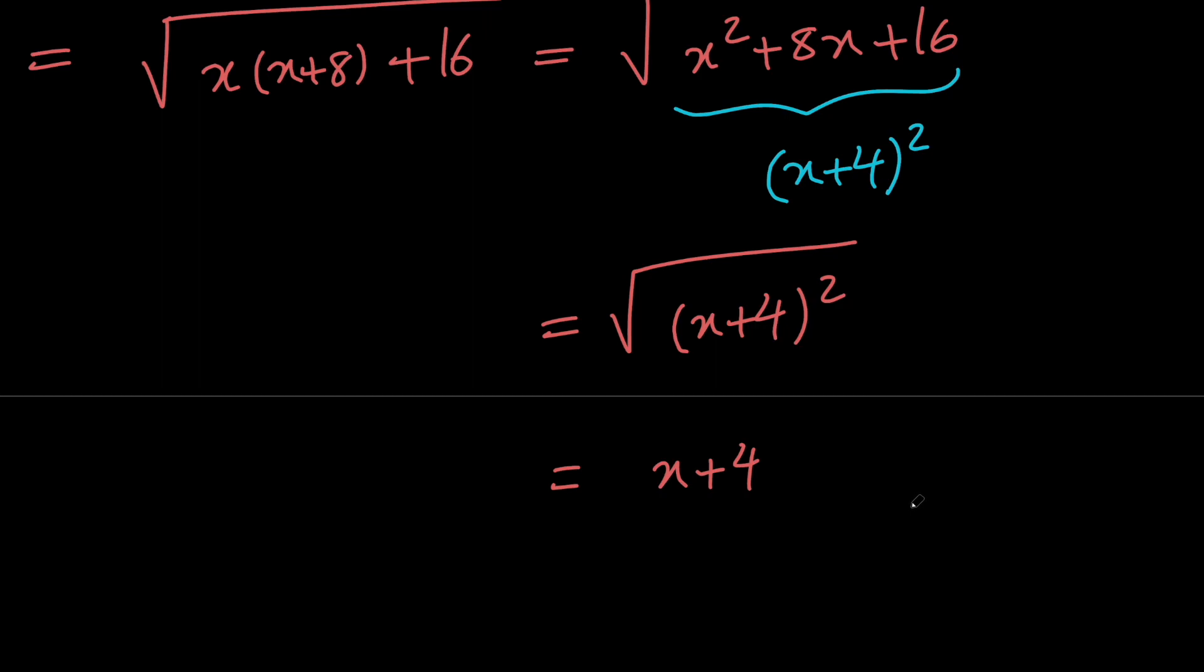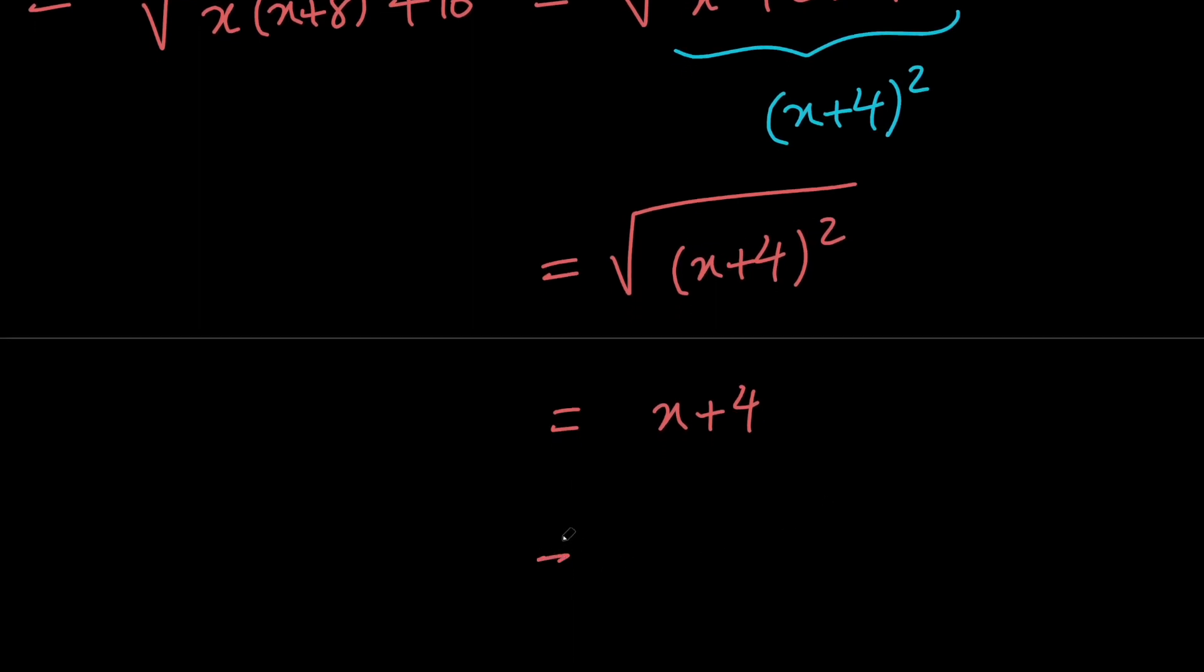And in this case, since x is 200, x plus 4 is positive. So this equality holds, and that means that this equals x plus 4, or 200 plus 4, or 204. Great.